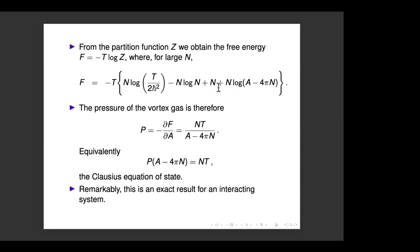From the free energy, the pressure of the vortex gas — N vortices on a large surface moving according to purely kinetic energy on moduli space — is minus the derivative of the free energy with respect to area A. This gives a very simple equation of state: P times (A − 4πN) = NT. Compare this to an ideal classical gas in two dimensions: P·A = NT. The correction — subtracting 4πN from the area — is the Clausius equation of state, the two-dimensional analog of the familiar three-dimensional result.